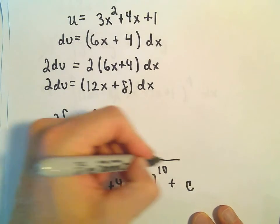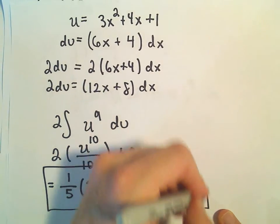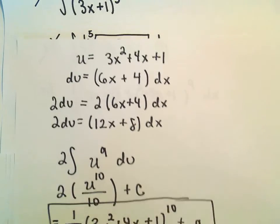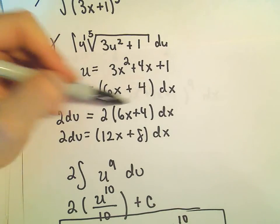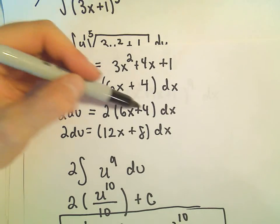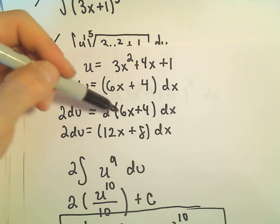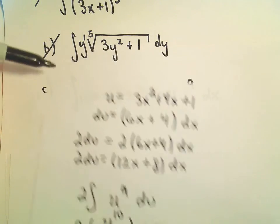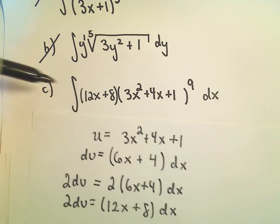And now we found our anti-derivative. It's certainly common when you calculate your du for it to not work out exactly. So just look, especially maybe you can just multiply or divide to get the numbers that you need.